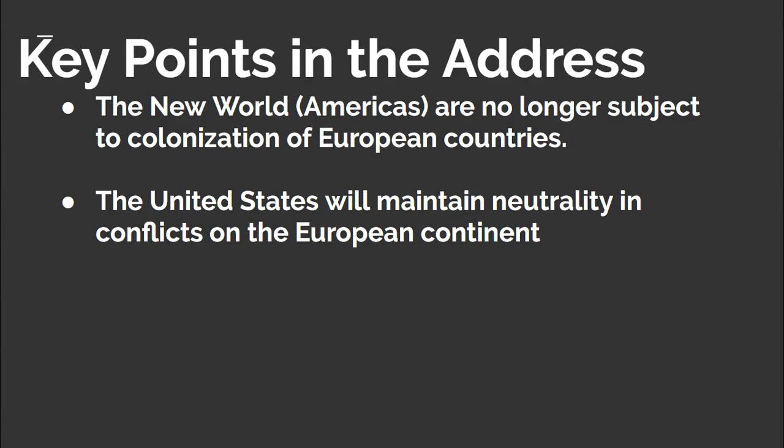There are two key points to understand about the Monroe Doctrine. Number one is the American policy that the New World is no longer subject to the colonization of European countries. The second key point is that the United States will remain neutral in conflicts on the European continent. This harkens back to Washington's farewell address.